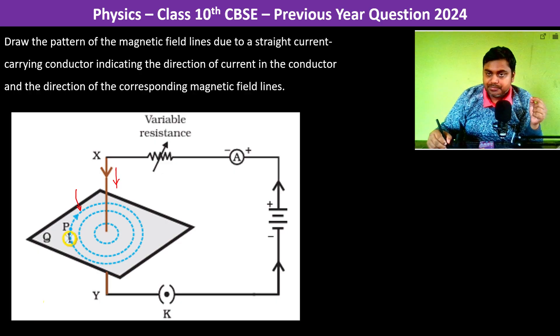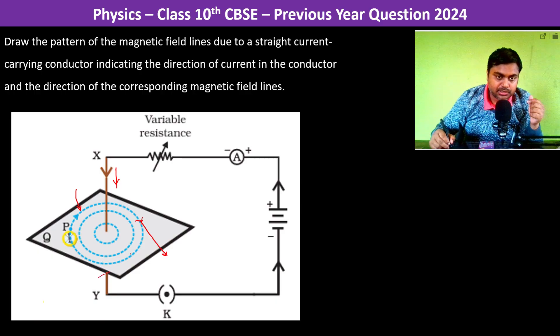Wherever we want to find the direction of the magnetic field at any point we have to see the tangential direction. Let us say here it is going to be in this direction, here it is going to be in this direction, here it is going to be in this direction and so on and so forth.